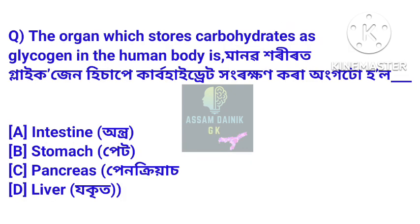Next question: the organ which stores carbohydrates as glycogen in the human body is — Manob horiur at glycogen in the human body — aungo to hole? Answer: Liver. The liver stores carbohydrates as glycogen in the human body.